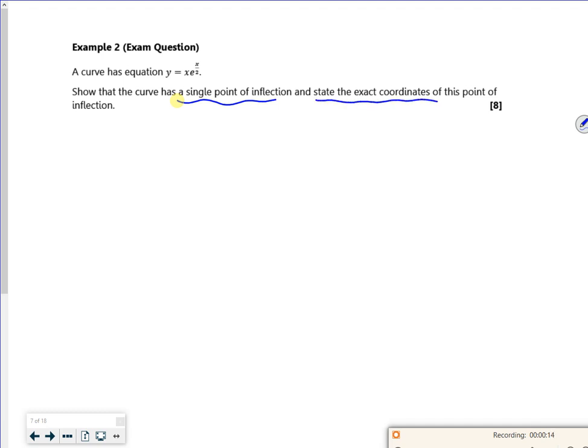Right, so I'm going to use the product rule because I've got one bit multiplied by another bit.